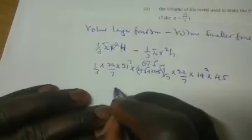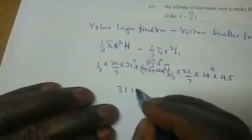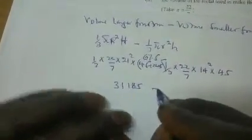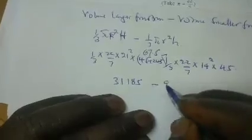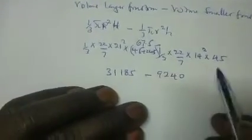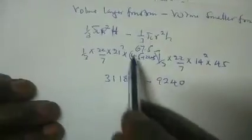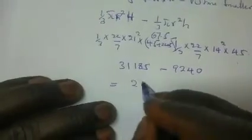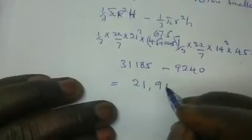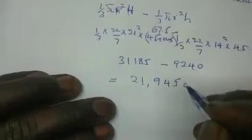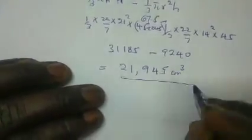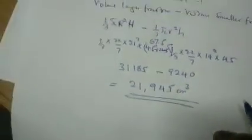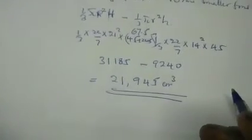This multiplication gives us 31,185 minus 9,240. Subtracting gives us 21,945 cubic centimeters as the volume of the material for the frustum.